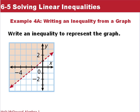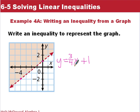In our last example, we write an inequality to represent a given graph. The y-intercept is at (0, 1). The slope — going down 1 and over 3/4 — gives us a slope of 3/4. It's a dashed line, so it's not equal. The shading is above the line, so y is greater than (3/4)x + 1.